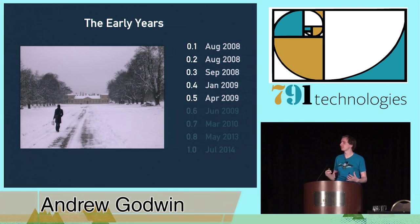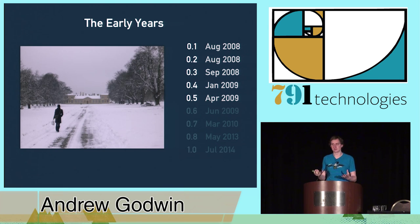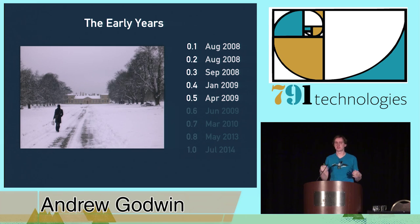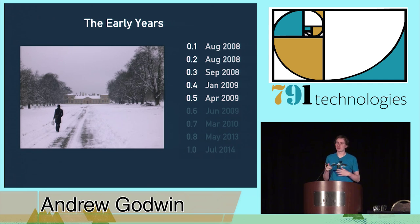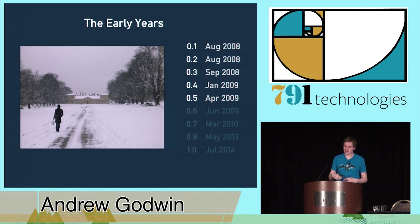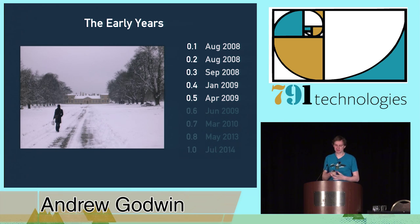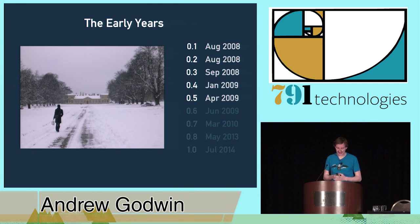The first few versions were made for a single project — a moderately complicated CMS for a customer. Previously at the company, the method was a directory full of SQL files that we ran, keeping the number in our heads. That improved to having a column with a number in it. Then at some point, me and Nick Birch, my colleague, thought we wanted a more formal system, and out of that South was born.